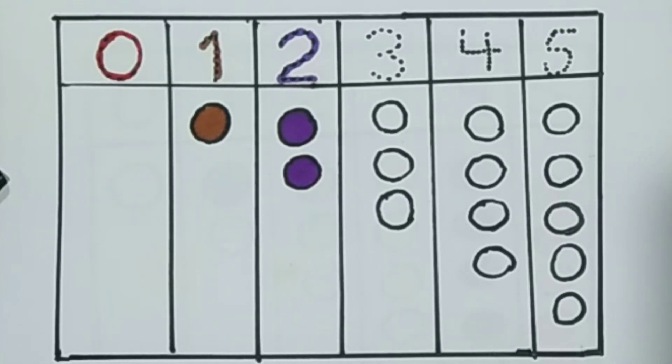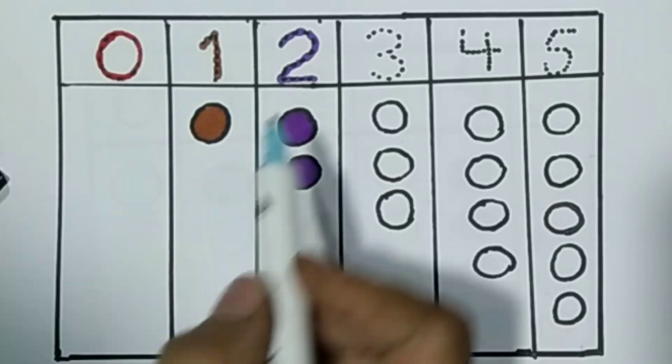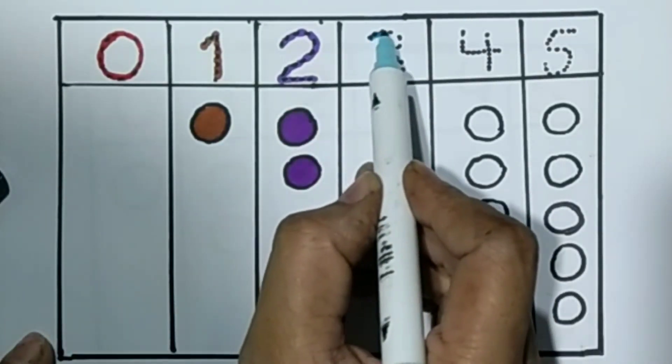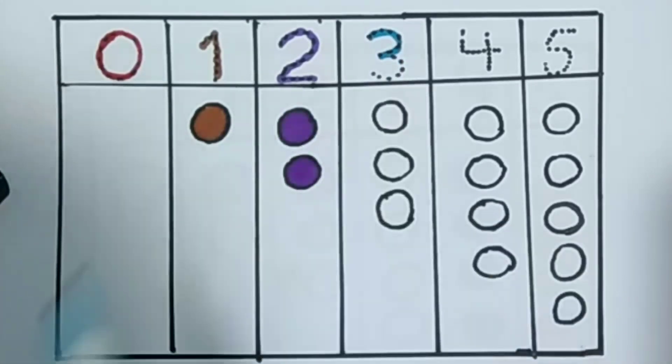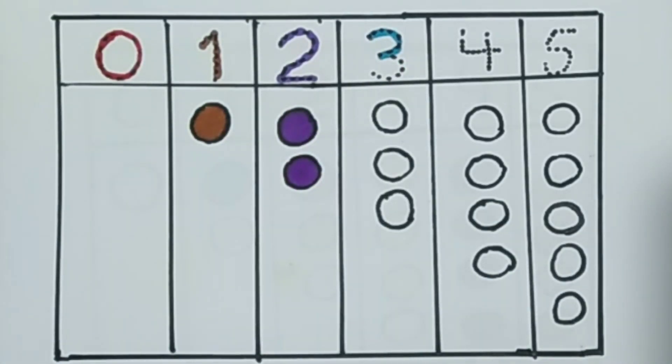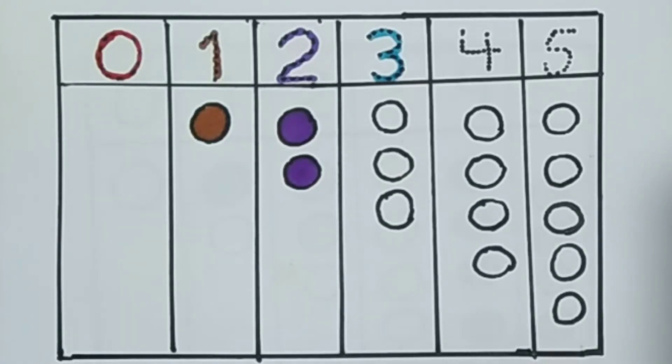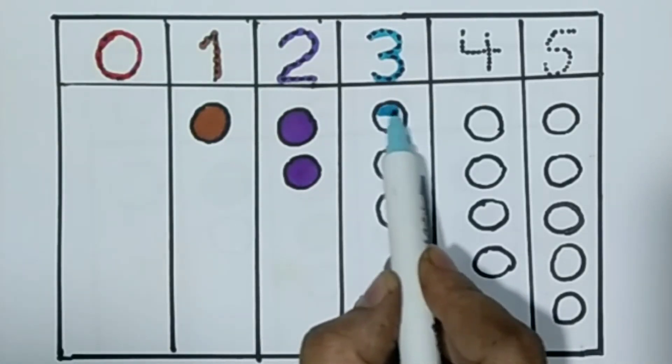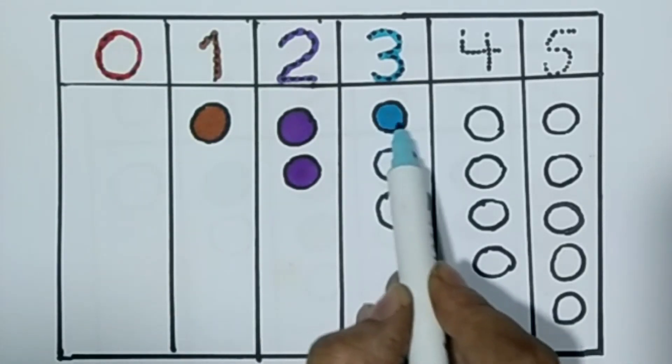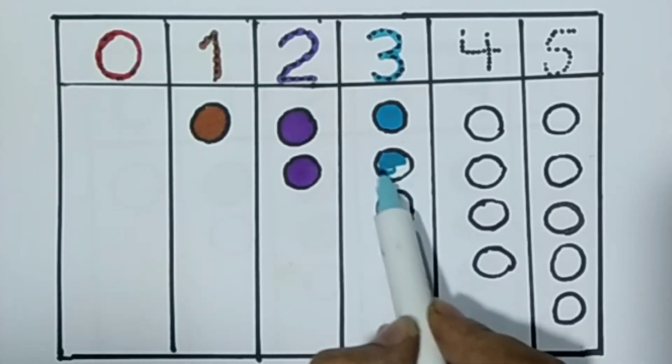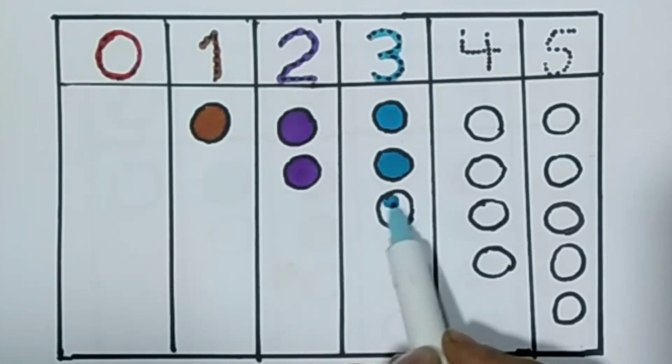And we draw counting number 3. Blue color. Number 3. Three circles.